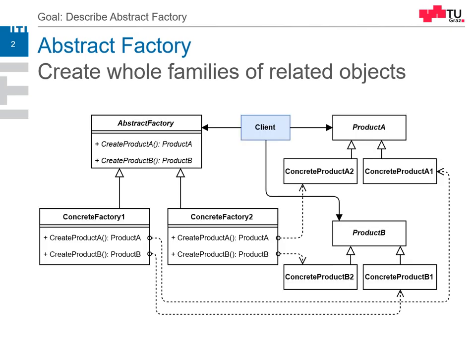So it could look like this. Our client wants to create objects, and we have two lines of objects — product line A, which is compatible to each other, and product line B, which is compatible to each other. They have interfaces which work together. We don't know exactly which family of objects we want to use at runtime, so we want to be flexible there, and therefore we use an Abstract Factory.